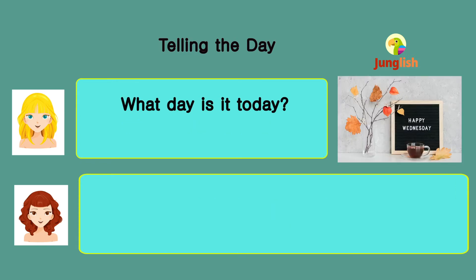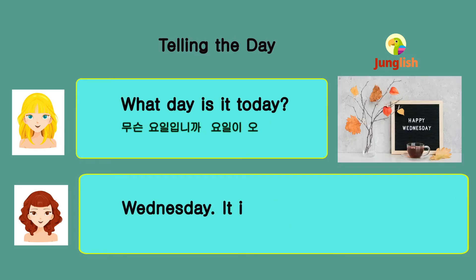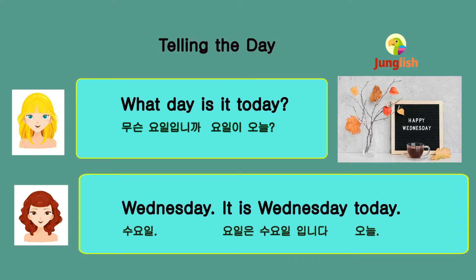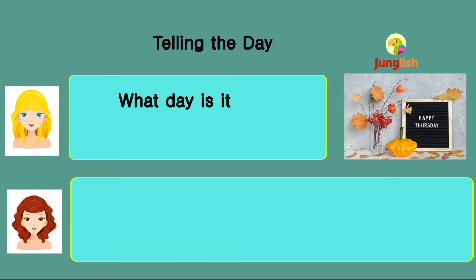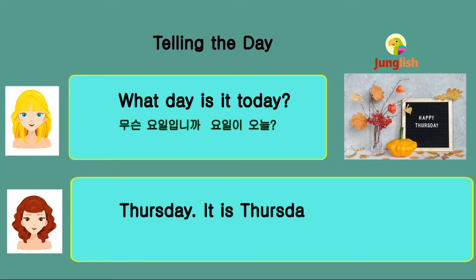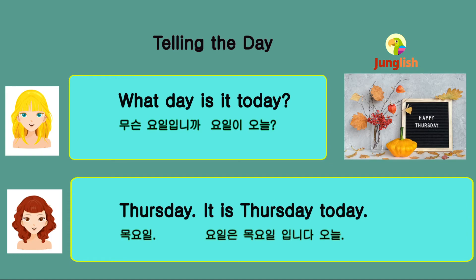What day is it today? Wednesday. It is Wednesday today. Wednesday. It is Wednesday today. What day is it today? Thursday. It is Thursday today. Thursday. It is Thursday today.